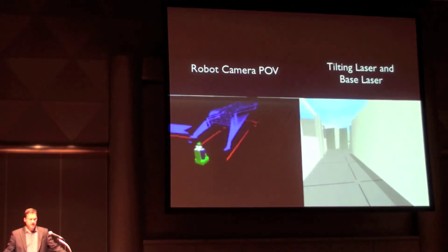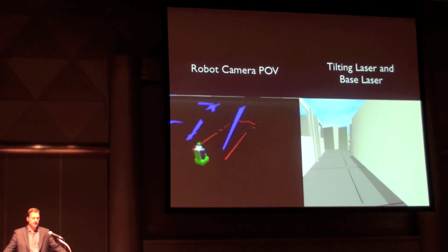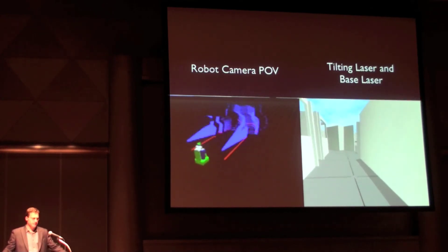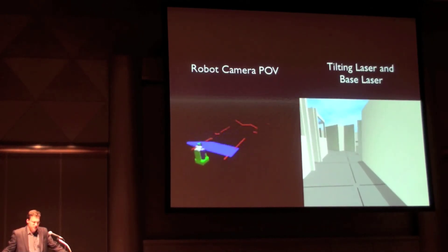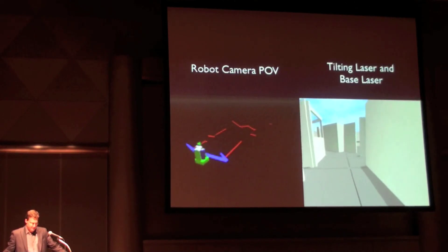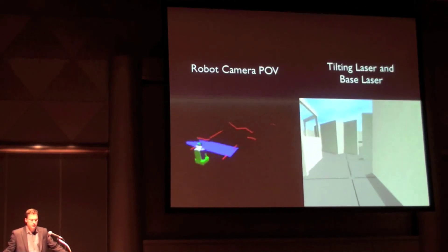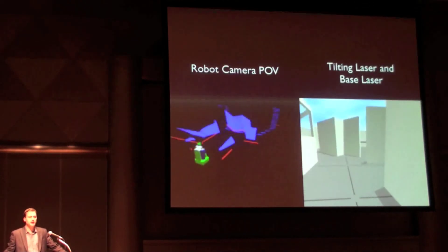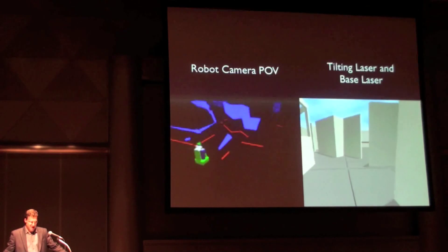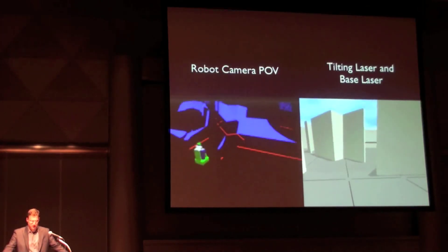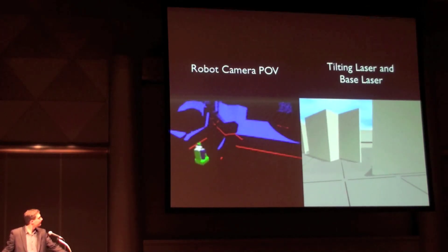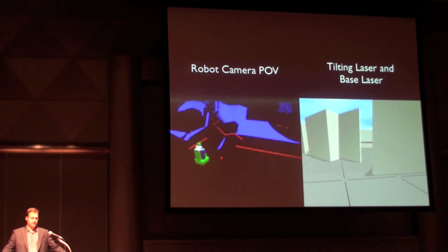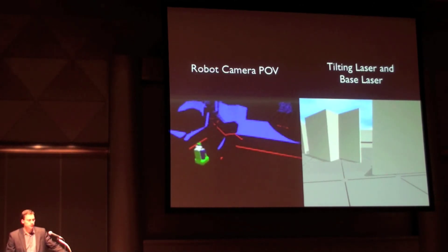Here is a sample of the PR2 navigating offices in the simulator. This simulation is running the Ross navigation stack. On the left you can see a visualization of the simulated laser data, and on the right you can see the environment through one of PR2's cameras. The logging and playback system, the visualization tools, and the simulator are just a few of the developer tools in Ross.